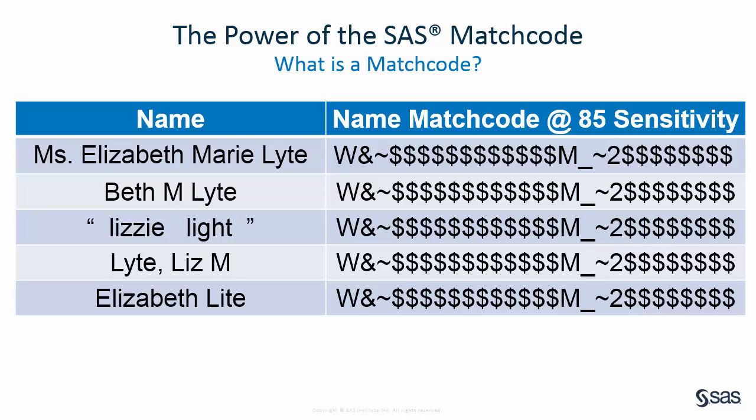The concept behind the match code is that two input strings do not need to exactly match in order to generate the same match code. The degree of similarity between strings used to generate the same match code is set by a numeric sensitivity value. By changing the sensitivity value, you change the number of matches between match codes. SAS match codes have a sensitivity range of 50 to 100.